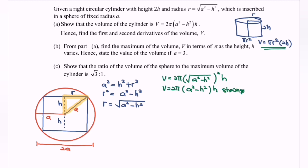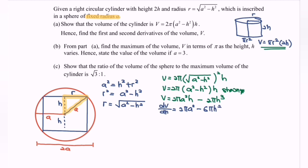Next, find the first and second derivatives of the volume. Expanding the expression gives V = 2πa²h − 2πh³. Differentiating with respect to h — noting that a is the fixed radius of the sphere, so it is a constant — we obtain dV/dh = 2πa² − 6πh². For the second derivative, d²V/dh² = −12πh.